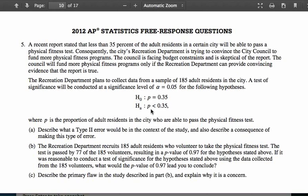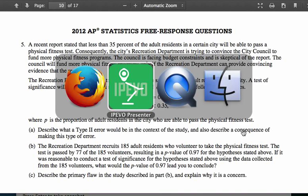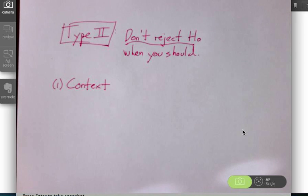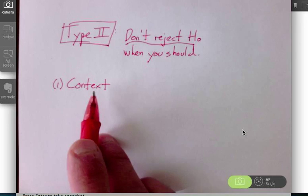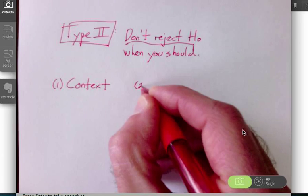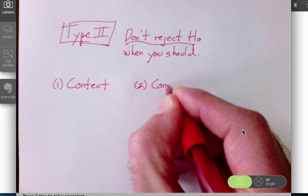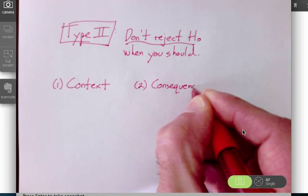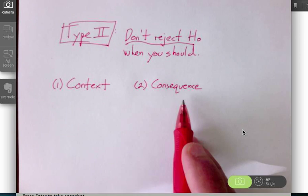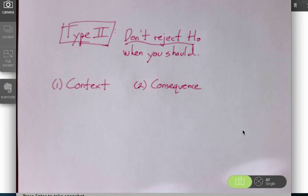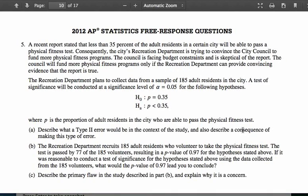So next, the next part of the question in terms of the consequence. There's a difference between writing about what the Type II error means in context and what the consequence then of making that error is. Based on what you've written here, you can describe the consequence. And the consequence goes back to the question itself.